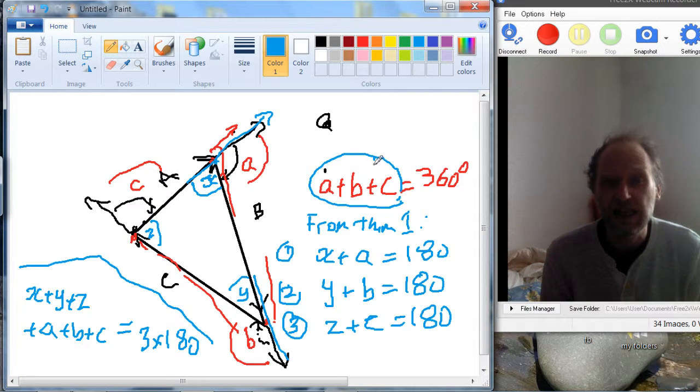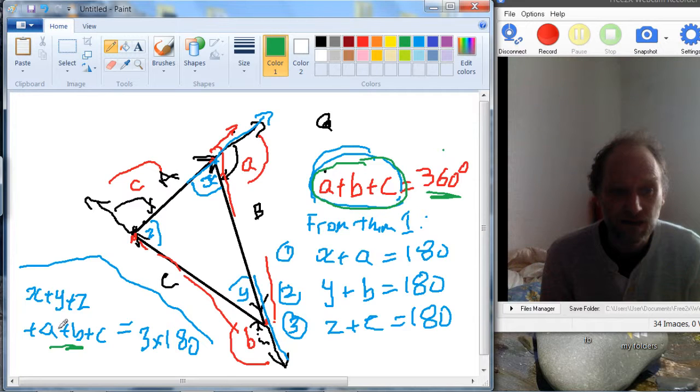Okay, but A plus B plus C, we already know what A plus B plus C is, it's 360. So this bit here, we can replace, and we can call that 360. So then we have X plus Y plus Z is equal to three times 180 minus 360.